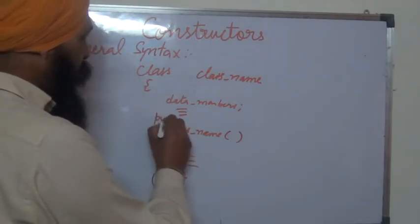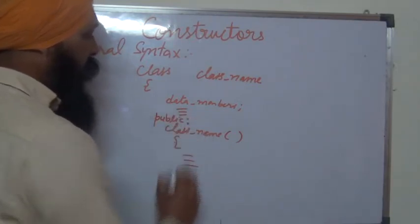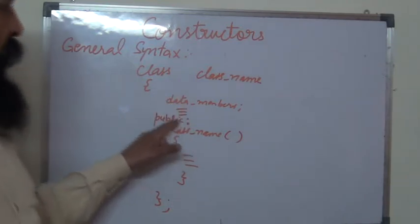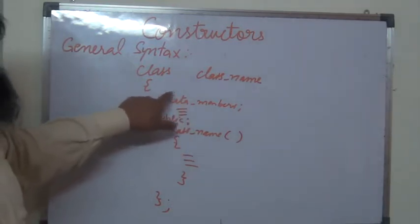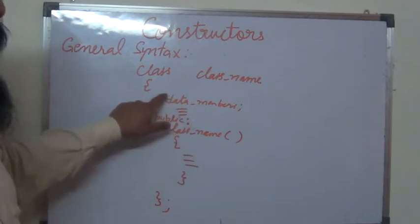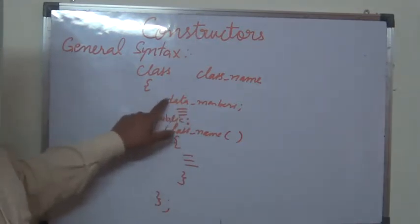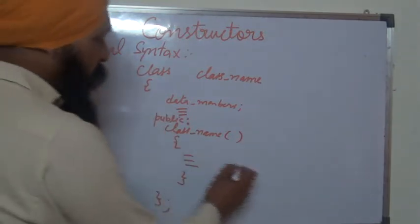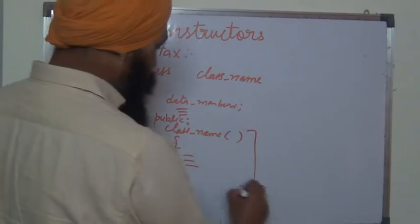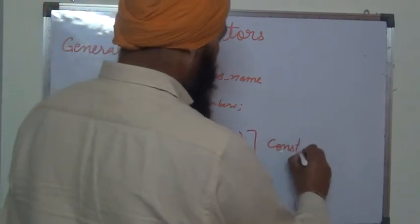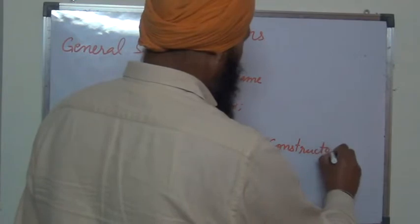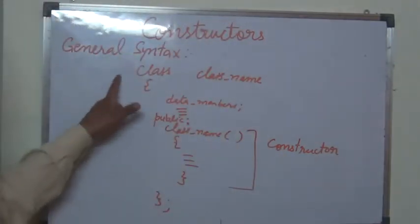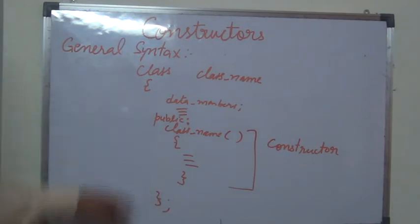The Constructor should be in the public section, so write public here. The data members are automatically private because no access specifier was given before them. The Constructor will be public. This is the general syntax for creating a Constructor, used to initialize objects.